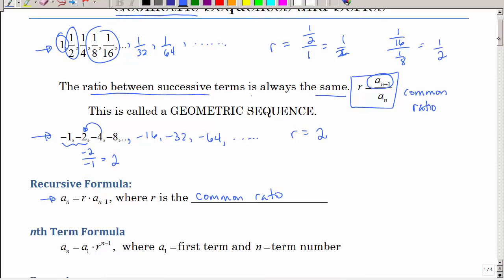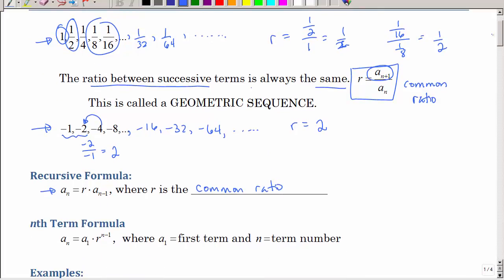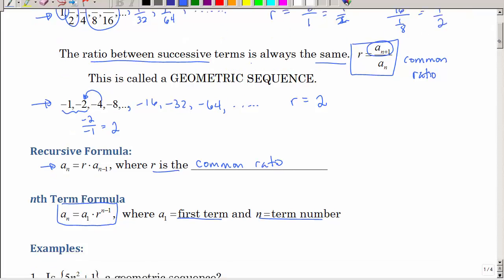But just like in arithmetic, we also have an nth term formula that's probably going to be more helpful, which is this. Again, we have our first term, and we have the term number, and then we have r, where we have the common ratio. Let's go through some examples to just familiarize ourselves with these formulas.